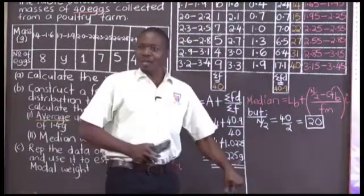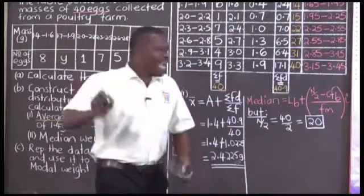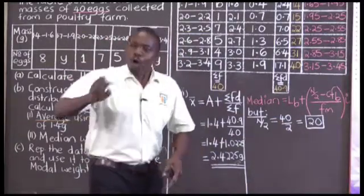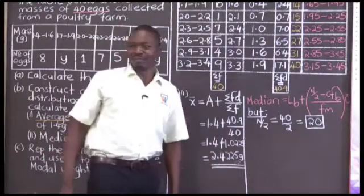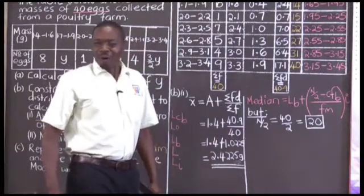But where it can be accommodated should be a number, either equal to that 20, or greater than that 20, but not less than that 20. Are we together?